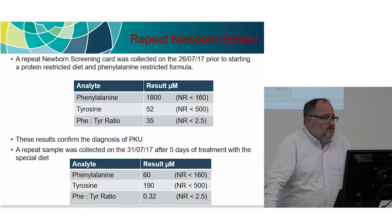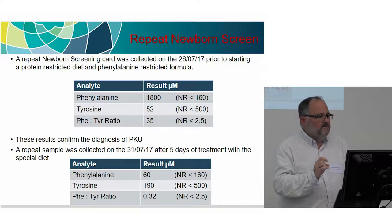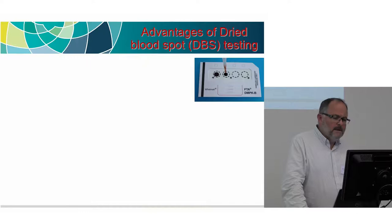Repeat samples done five days after treatment — a special diet with low protein and low phenylalanine — showed improvement. It shows you the advantages of a dry blood spot: we can do these things very quickly, give a result back very quickly, the clinician can intervene, and essentially prevent the child having significant issues by early intervention.